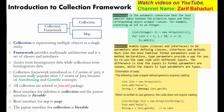The collection framework became really popular after version 1.5, because of auto-boxing and the generics concept. Auto-boxing is the automatic conversion that the Java compiler makes between primitive types and their corresponding objects. For example, you can create a list of integers using ArrayList, and use a for loop with integer values.